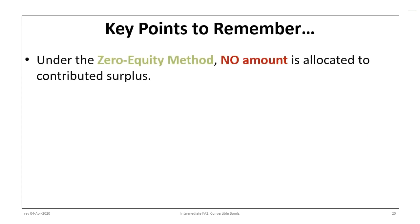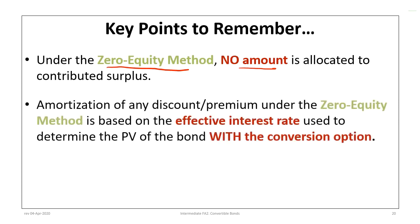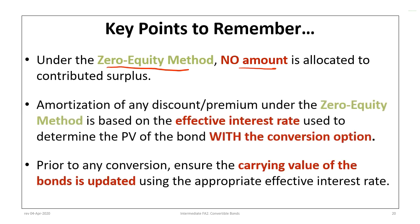Under the zero equity method, no amount is allocated to contributed surplus. Amortization of any discount or premium is based on the effective interest rate using the PV of the bond with the conversion option. Prior to any conversions, ensure that the carrying value of the bonds is updated using the appropriate effective interest rate — that's what we illustrated with the last interest payment entry just before each conversion.